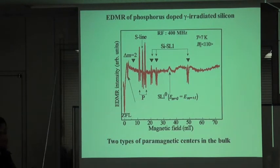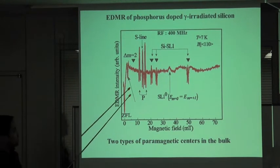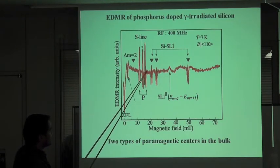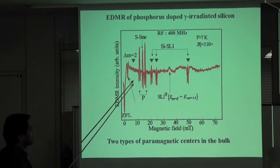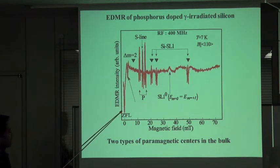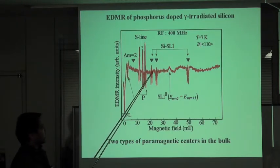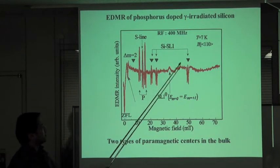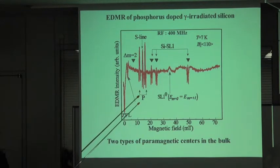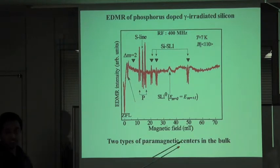Here I show the full scan of the spectra at an applied RF frequency of 400 MHz. We see the two phosphorus lines, a surface center line in the middle, a zero-field line at zero magnetic field, another signal I will explain later, and then the SL1 lines. Phosphorus and SL1 are both in the bulk, so we now have two spin systems in our bulk sample.